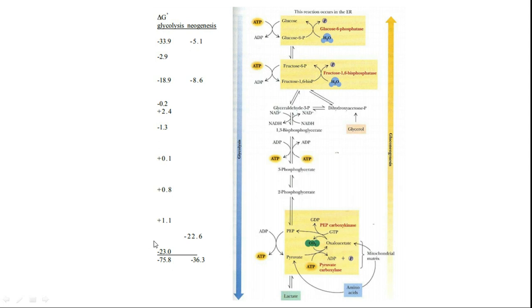In gluconeogenesis, the enzymes at these steps actually utilize energy. The net change for glycolysis is minus 75 kilojoules, whereas in gluconeogenesis the net change is minus 36.3 kilojoules — meaning we are spending a lot of energy in the biosynthesis of glucose. Let's now see the step-by-step process of gluconeogenesis. A little bit happens in the cytosol, and two steps happen in the mitochondria.